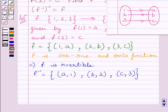f inverse is invertible implies inverse of f inverse is also invertible. So we get inverse of f inverse is equal to the set of ordered pairs: (1, a), (2, b), and (3, c).